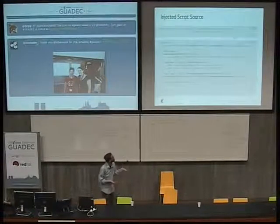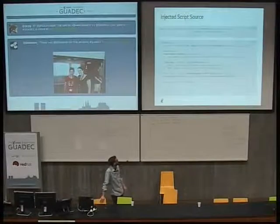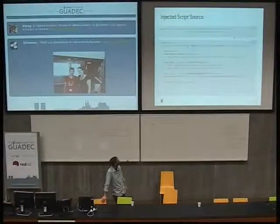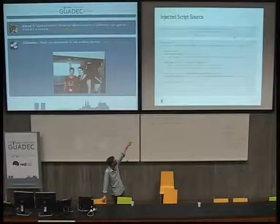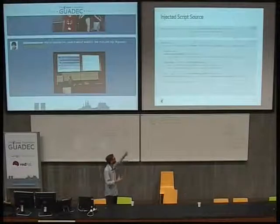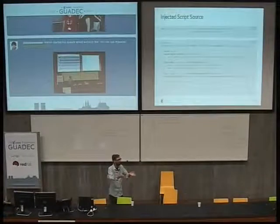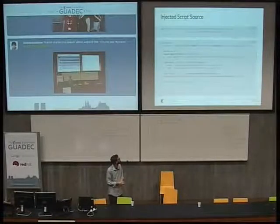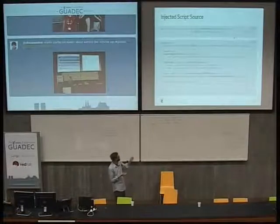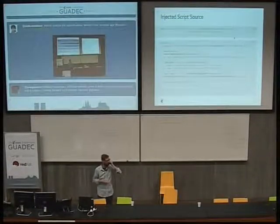That looks like this: you call webkit_web_view_run_javascript with the WebView. This string here is the script that you write, and then you give it a callback. In the callback, you call webkit_web_view_run_javascript_finish, like GIO again. You get this serialized return value, and everything below that is getting the actual JavaScriptCore values from the return value. These JS APIs are the JavaScriptCore API — the API for touching the JavaScript engine itself. We're just converting this value into a string and then into a C string.